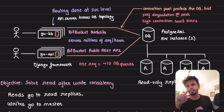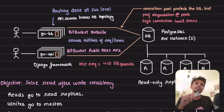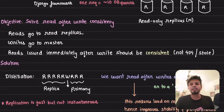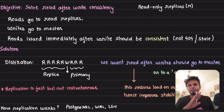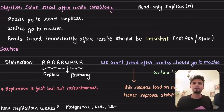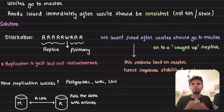With a master-replica setup, writes go to master and reads go to replica. Due to replication lag, the replica may not yet have the data you just wrote. The objective is to solve read-after-write consistency: if I'm the user and I fire a write and then a read, I should get my most recently written data. Simple.